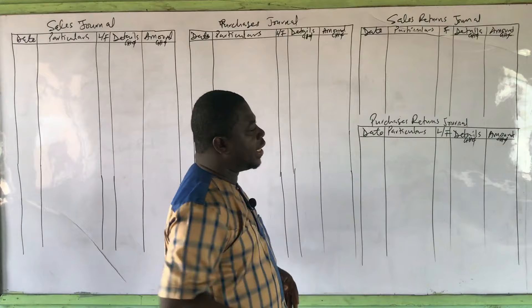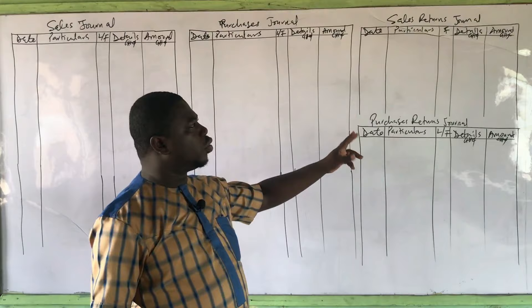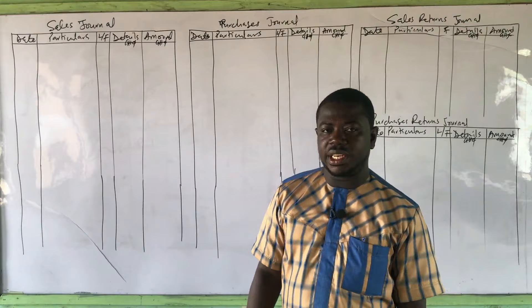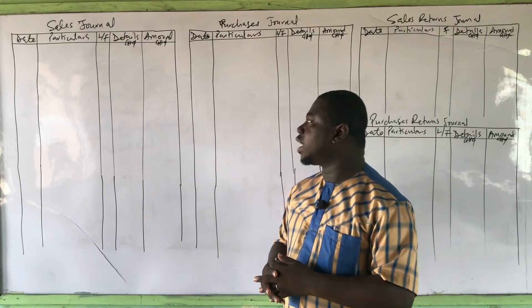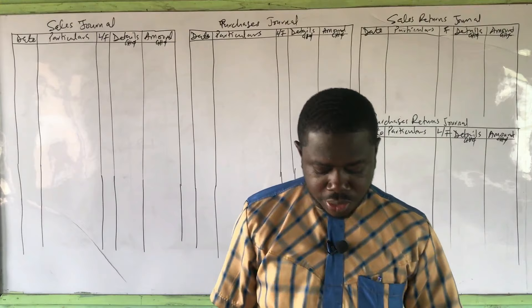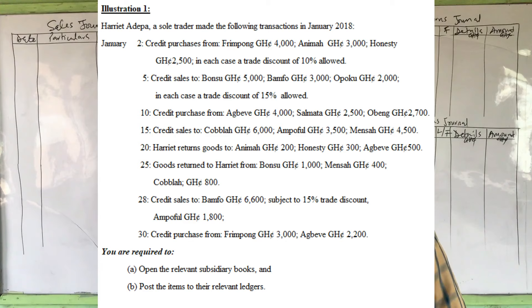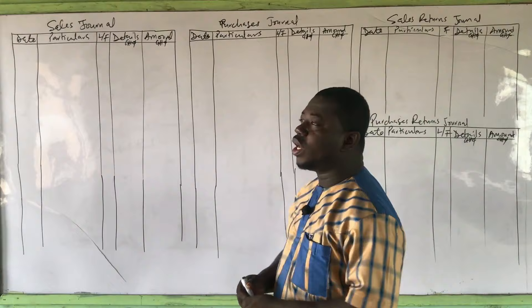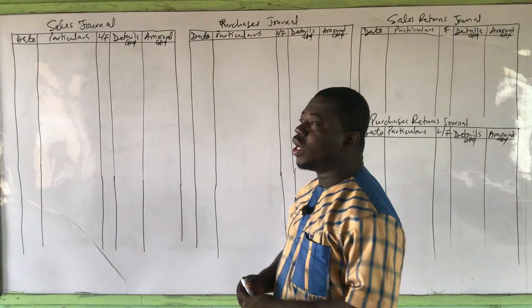January 25th: goods returned to Harriet from Bonsu 1,000, Mensa 400, Kobla 800 Ghana cedis. January 28th: credit sales to Bamfo 6,600 subject to 15 percent trade discount, and Ampofo 1,800 Ghana cedis. January 30th: credit purchases from Frempon 3,000, Agbeva 2,200. We are required to: (a) open the relevant subsidiary books, and (b) post the items to the relevant ledgers. I will concentrate on part (a) in this video, then part (b) in the next video.